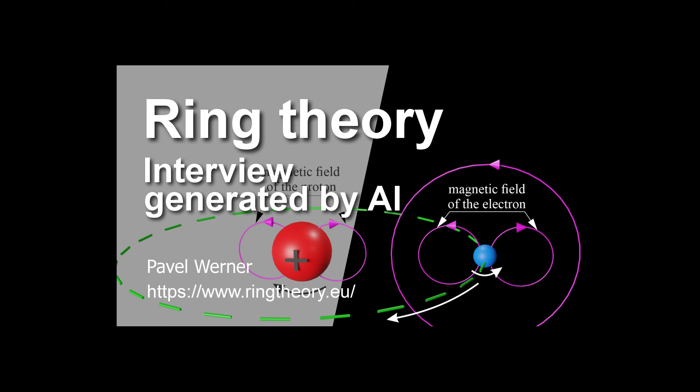Well, it's still a very young theory, but its potential applications are vast. For one, it could revolutionize our understanding of nuclear fusion, the process that powers the sun. Nuclear fusion, right. That holy grail of clean energy that scientists have been trying to crack for decades. The very same. And one of the biggest challenges with fusion is understanding and controlling the incredibly complex forces at play within the nucleus of an atom. But if RT is correct, and those forces are primarily magnetic in nature, it could open up entirely new avenues for designing and building fusion reactors. So instead of just trying to brute force our way to fusion, we could learn to work with the natural magnetic dances of those ring-shaped particles. Exactly. We could potentially create a more elegant, more efficient way to unlock the incredible energy stored within the atom's heart.